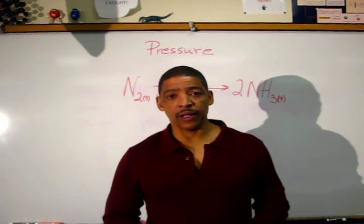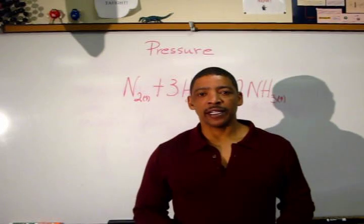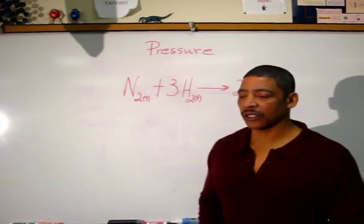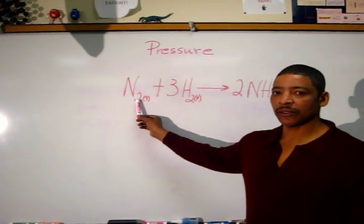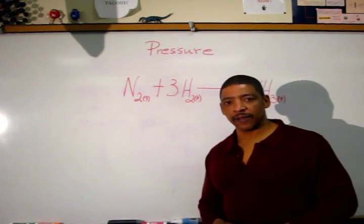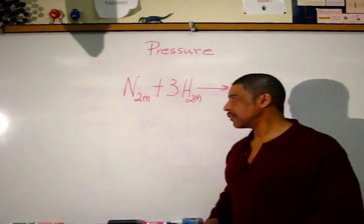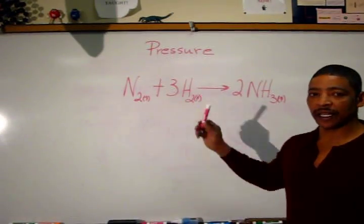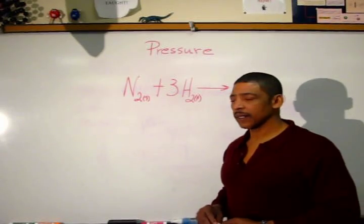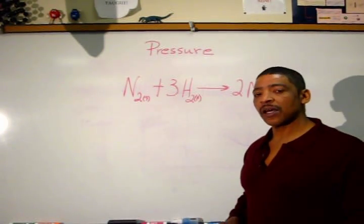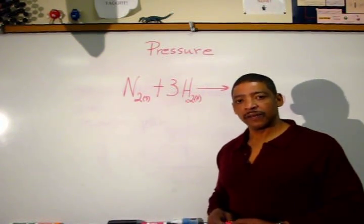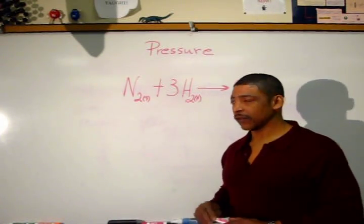In the case of reactions involving gases, the rate of the reaction may be increased by increasing the pressure. Increasing the pressure will cause the reacting particles to be forced closer together, which will increase the number of effective collisions. In this example, nitrogen gas reacts with hydrogen gas to produce ammonia. By increasing the pressure on this system, the nitrogen gas particles and the hydrogen gas particles are pushed closer together, making it much easier for these particles to collide to form a product.